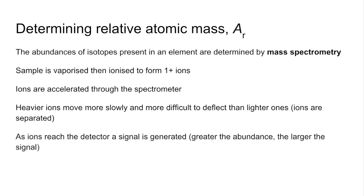As the ions reach the detector, you get a signal. The greater the abundance, so the more of a particular isotope, the larger its signal is going to be.